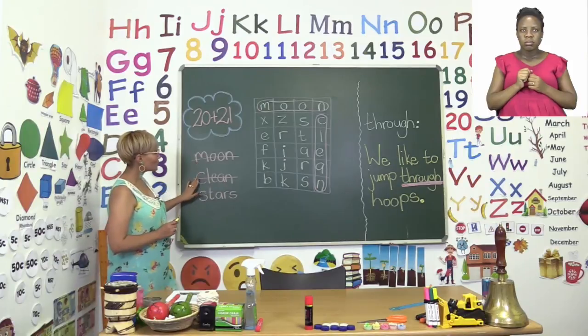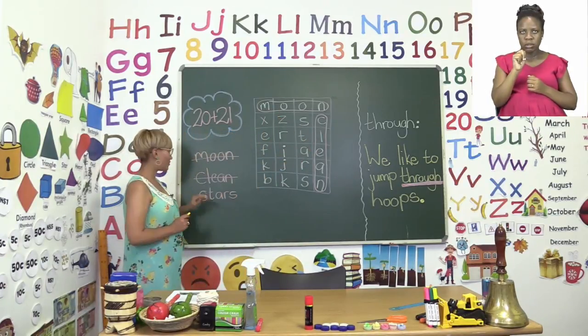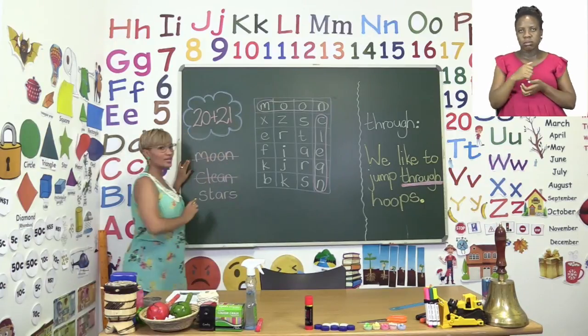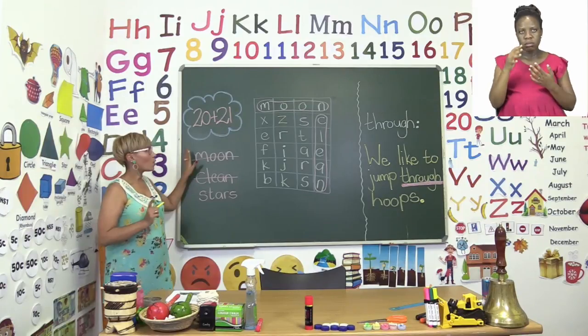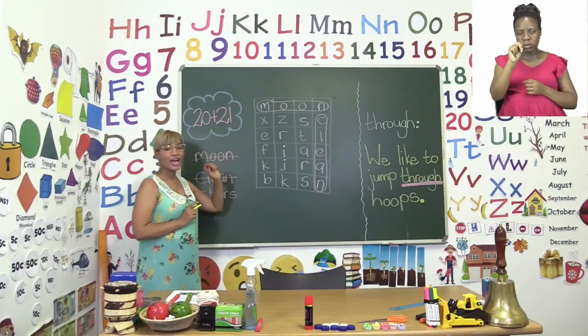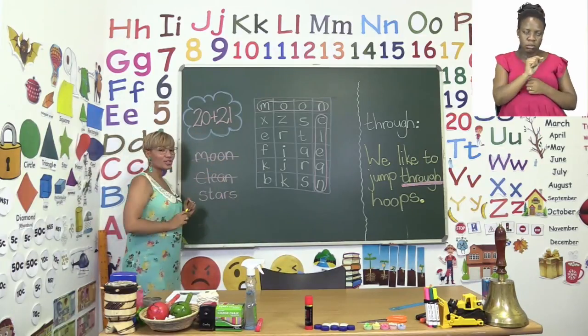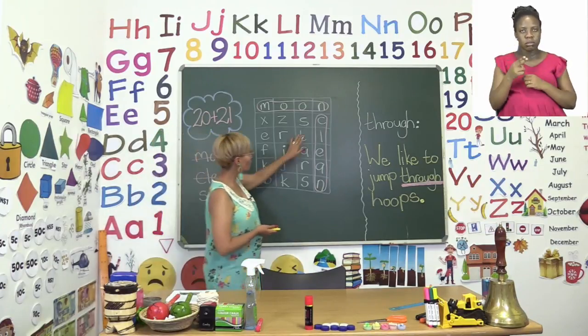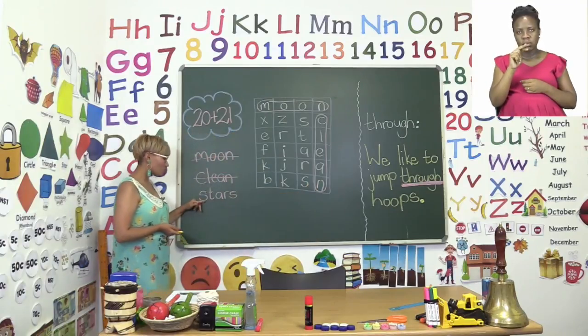Now you will see two of the words have been circled already. The first one is the word moon. Can you see moon is circled over there? Now remember everyone when or once you have found a word in your word search and you have circled it, then you must go ahead and cross it out from the list. The next word was found also and that is the word clean, so we have to go ahead and find the word stars.